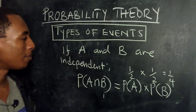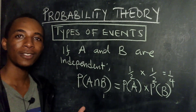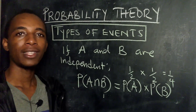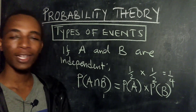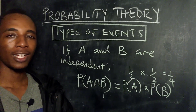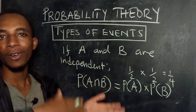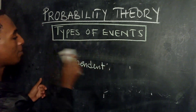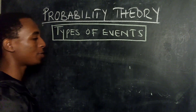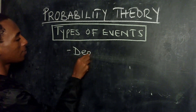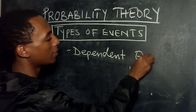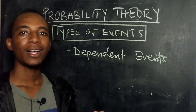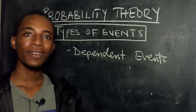We'll continue to explore this in more videos ahead. So independent events are two events such that the occurrence of one event doesn't affect the other. Now speaking of independent events, we should also speak of dependent events. Dependent events are those where the occurrence of one event depends on the other.